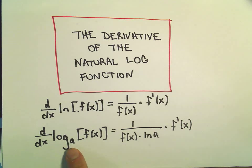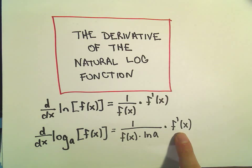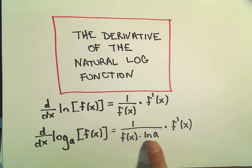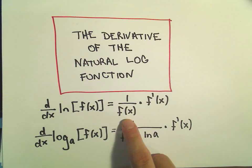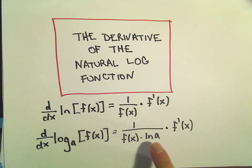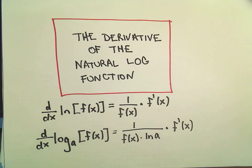And then if we have log base a of f(x) we get 1 over f(x), we also have to do f prime of x. But the new thing is we get the natural logarithm of this base a in the denominator. And again, you also get it in the first formula, but we would have a natural logarithm of the base which would be e, and the natural logarithm of e is just equal to 1.